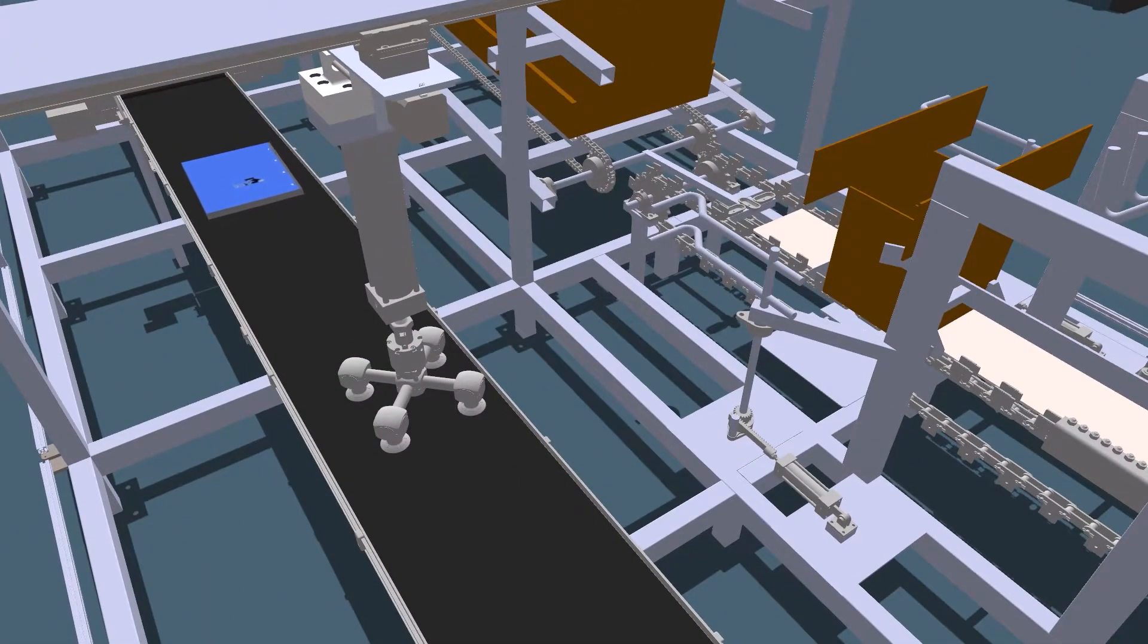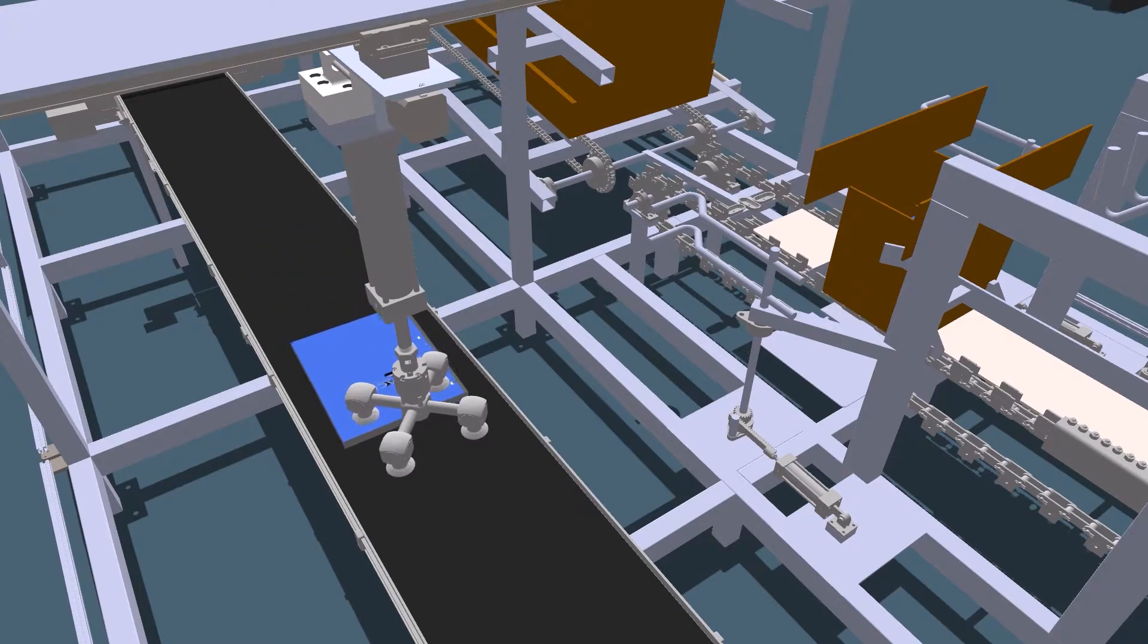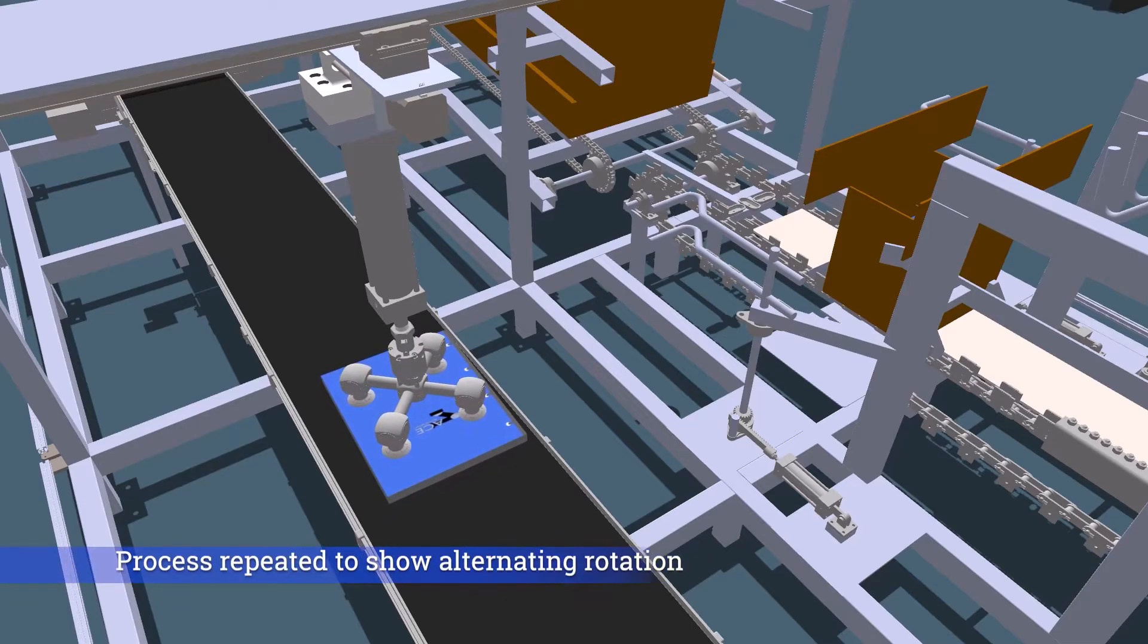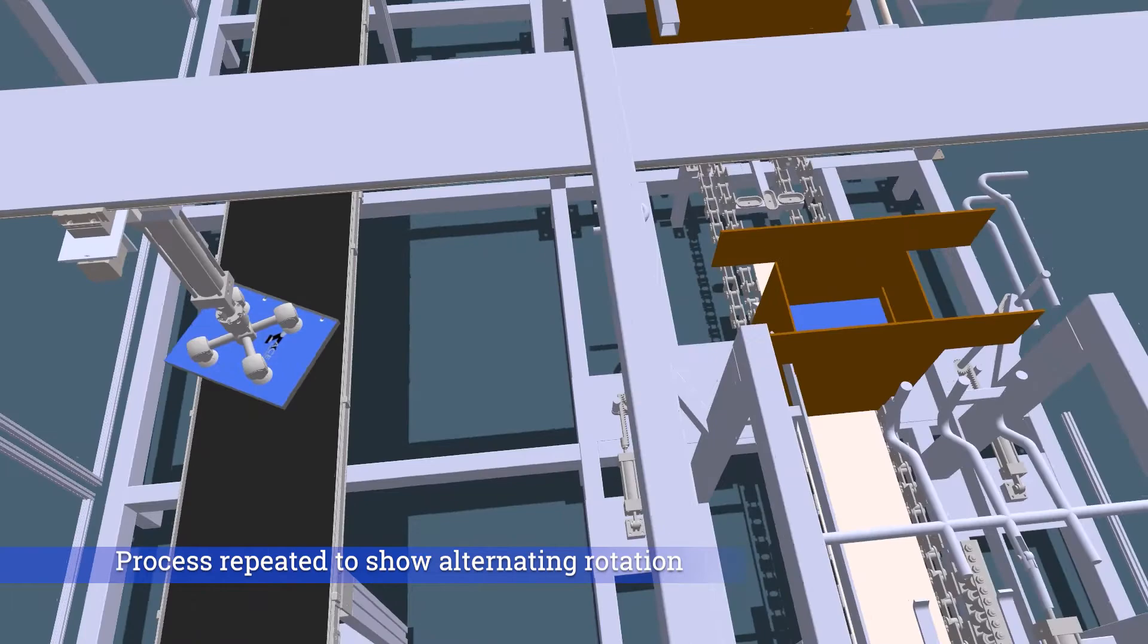Every other notebook's orientation is alternated so that the bindings are not all present on one side. This is done for the purpose of maximizing the number of notebooks packaged into the box. For the purpose of demonstration, we have shown you the first and last notebook being placed.